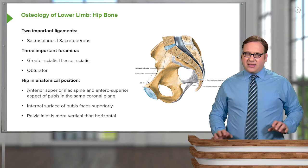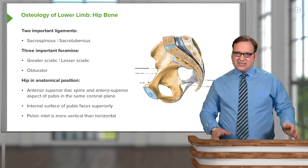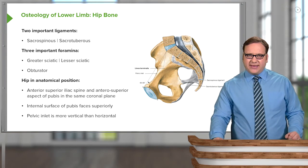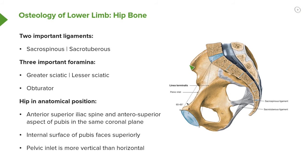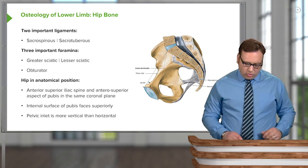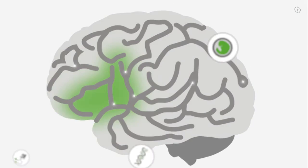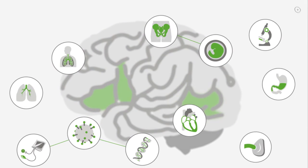It's important to bear in mind the hip in its anatomical position, which is tilted a lot more anteriorly than people may expect. This means the anterior superior iliac spine and the anterior superior aspect of the pubis are in the same coronal plane. The internal surface of the pubis is therefore facing superiorly, and the pelvic inlet is more vertical than horizontal — the hip bone is actually tilted more forwards.